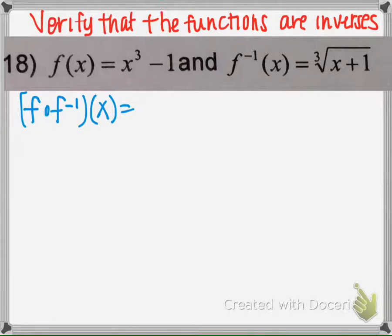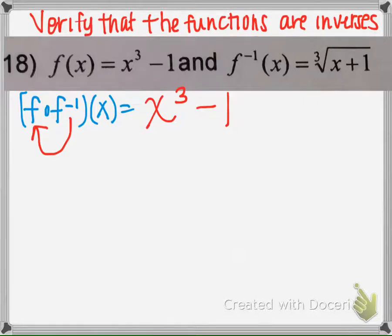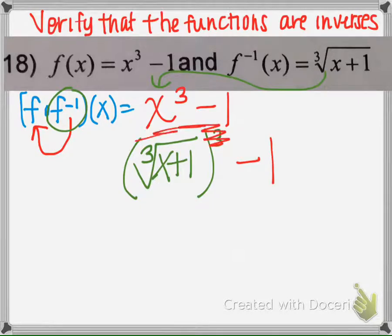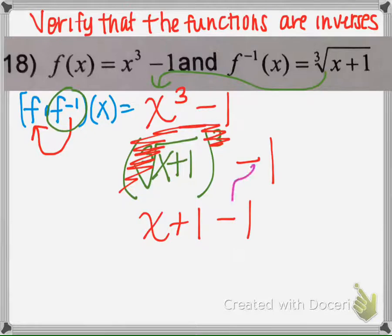Let's try another one. We want to verify that the functions are inverses. We're going to take the inverse and plug it in for x in the original function. We take the original function, which is x cubed minus 1, then take the inverse function and plug it in. We know from prior chapters that those cancel, leaving us with x plus 1. Bring that down, those cancel, and we're just left with x.